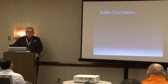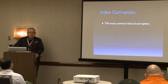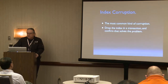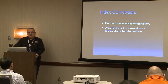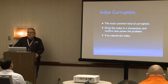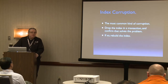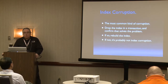The most common kind of corruption in Postgres is index corruption. You'll either get errors, or queries performing impossibly wrong. The first thing to do is start a transaction, drop the index, and see if that fixes the problem. The nice part is that DDL changes in Postgres are transactional — unlike every other database — so you can roll back and the index comes back. If it did fix the problem, rebuild the index. If not, it's probably not index corruption, or you got the wrong index.